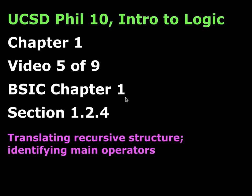Welcome to video five of nine for chapter one. This video I'm going to be mostly discussing section 1.2.4. The topic is going to be translating recursive structure and also identifying main operators. So far we've got two operators that we know how to translate: conjunction and negation. We haven't introduced disjunction and conditional yet — I'm going to do that in the next video.